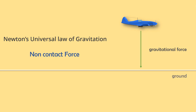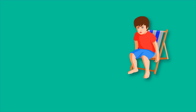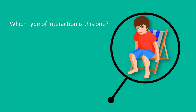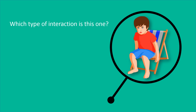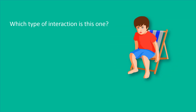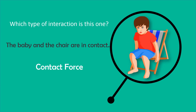Now let me give you a quick test. If a baby is sitting in the chair, can you tell me which type of interaction is this one? Well, there is a direct interaction between the baby and the chair, and we can say that the baby and the chair are in contact. Hence, there is a contact force between the baby and the chair.